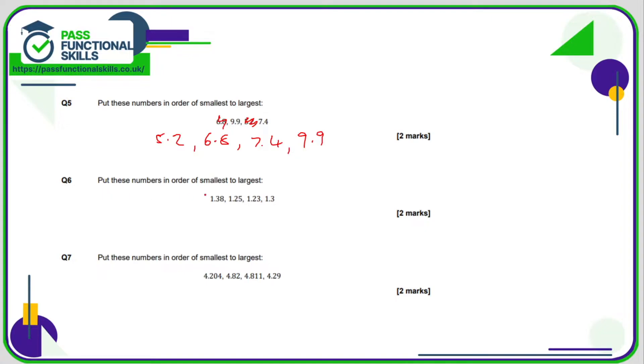Question 6, smallest to largest. So this is a bit harder because we can see that they all have 1 before the decimal point. Let's just write them out one on top of another: 1.38, 1.25, 1.23 and 1.3. With the 1.3 I'm going to put in a 0 so that all the decimals are of equal length.